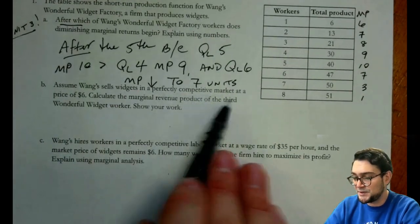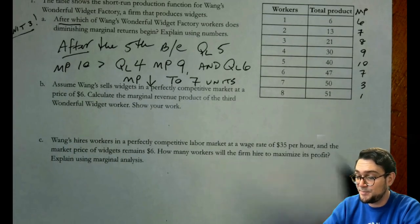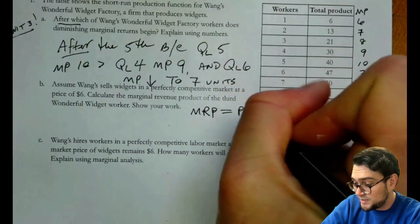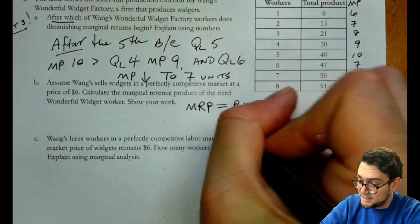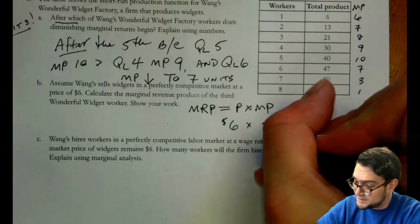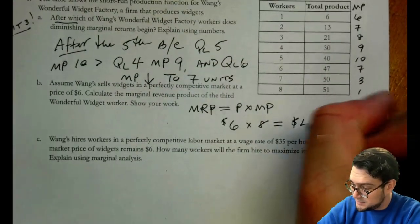Assume Wang's sells widgets in a perfectly competitive market at a price of six. Calculate the MRP of the third worker. So remember MRP is equal to the price times the marginal product. And we are given a price of six. And the marginal product of the third worker is eight. So that is 48.